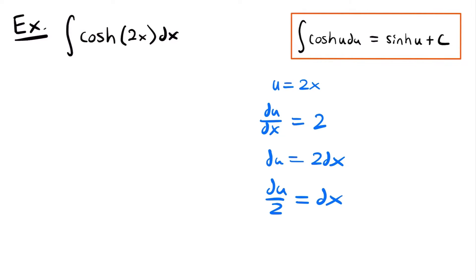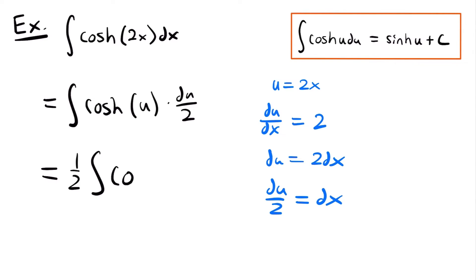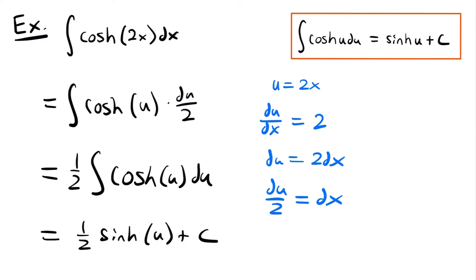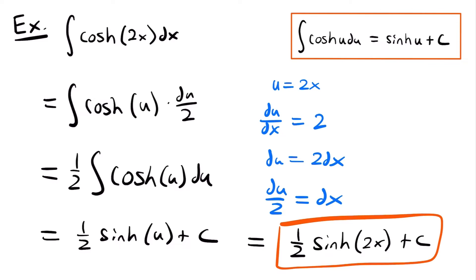Dividing both sides by 2 gives du/2 = dx. Now we can rewrite the integral in terms of u: the integral of cosh(u)·(du/2). Pulling the constant 1/2 out front gives (1/2) times the integral of cosh(u) du, which matches our integration rule. So this equals (1/2)·sinh(u) + c. Replacing u with 2x, we get (1/2)·sinh(2x) + c. That is the solution to this integral.